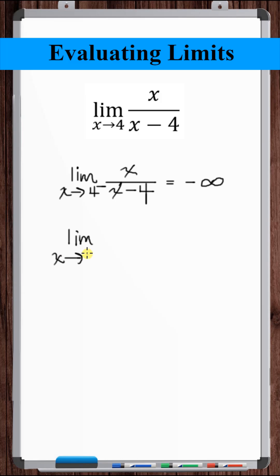Let's check coming from the right. Okay, so you've got 4.000,001 in the numerator, and then 4.000,001 minus 4. So that's 0.000,001 positive in the denominator. Number close to 4 divided by a tiny positive number is positive infinity.